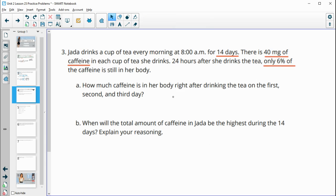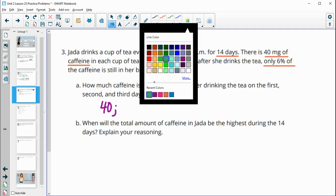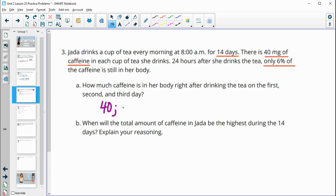So this first one wants to know how much caffeine is in her body right after drinking tea on the first day, the second day, and the third day. So on the first day, she'll have that 40 milligrams. Then on the second day, she's going to drink another cup of coffee. So on the second day, she's going to have 6% of this 40 and another 40. So if you take and calculate 6% of her first cup, so if you do 40 times 0.06, you'll get 2.4. So she has 2.4 milligrams left from the first day, plus she's going to drink another cup of tea, so another 40 milligrams.